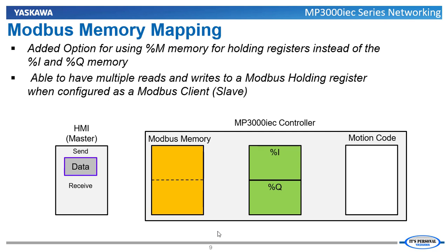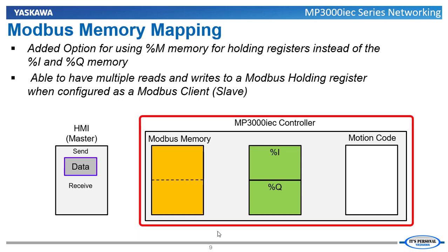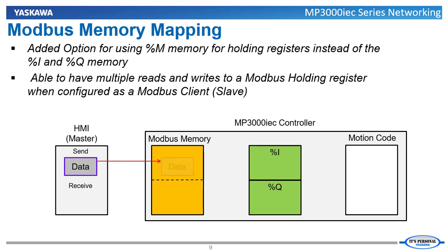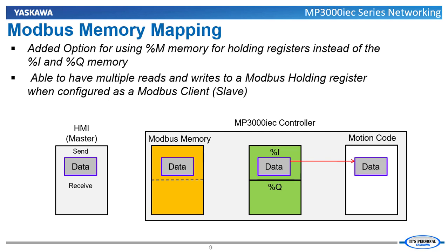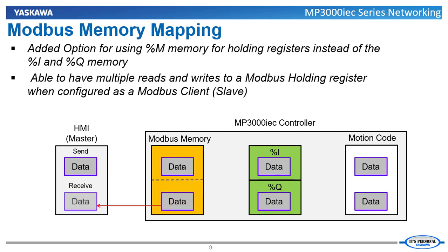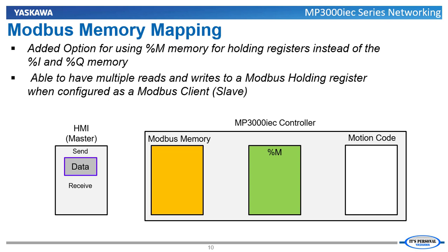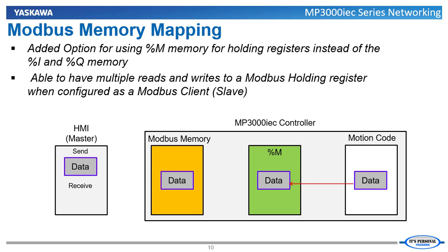For example, let's say that we have an HMI as a Modbus TCP master and an MP3000 IEC series controller as the Modbus TCP slave. The HMI puts data into the Modbus holding register via %I memory. The application code then uses the data in that %I register. If the HMI wants to see what the holding register value is, it would have to duplicate the %I holding register value in the application code and put it into a %Q holding register, which can then be read by the HMI. When %M memory is used, the holding register is bidirectional, so the HMI can write to it and read from it. The application code does not need to duplicate the value for the HMI to see what value it had written.